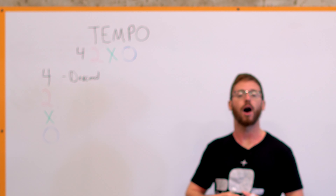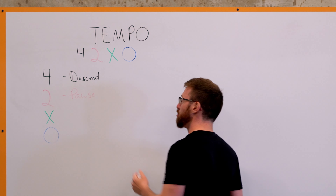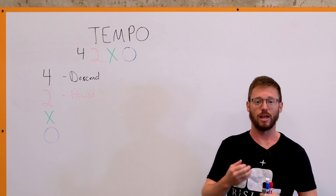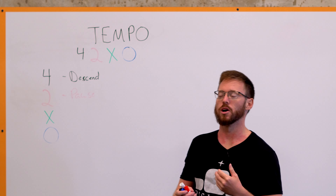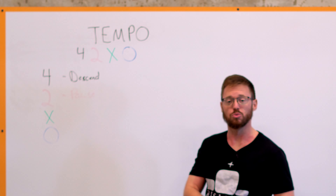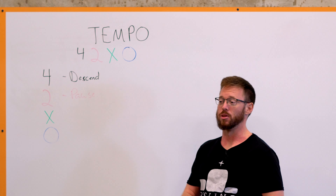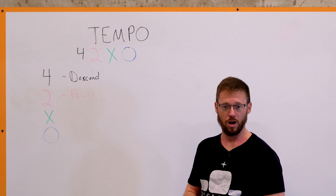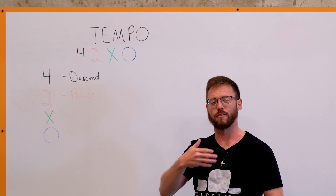The second number is how long of a pause there is — in this example a 2-second pause at the bottom or in the stretch position. For a chin-up that's the full hang position; on a curl your arm is fully straight; on a squat you're at the bottom. This is where you get the hardest part of the lift. One reason we add pauses is to work on starting strength or to take the bounce out. For the deadlift, that 2-second pause can be 1 inch off the floor, or it can be a 2-second reset on the floor before the next rep so you're starting from a dead stop.